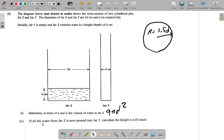Part 2 says if all the water in jar x is now poured into jar y, calculate the height it will reach.